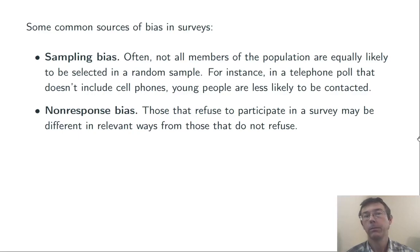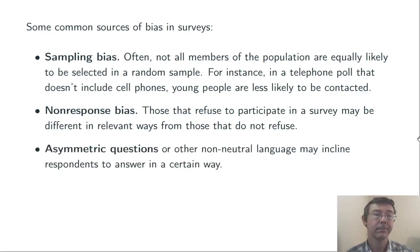Non-response bias. Those that refuse to participate in a survey may be different in relevant ways from those that do not refuse. In the pollster example, perhaps the voters that prefer candidate B simply don't like taking polls. Asymmetric questions, or other non-neutral language, can incline respondents to answer in a certain way.